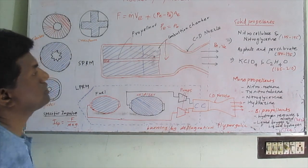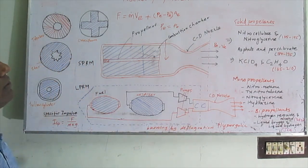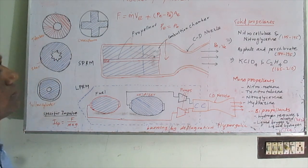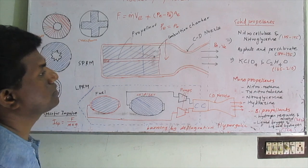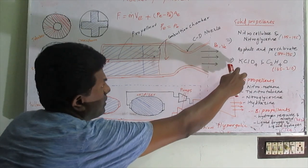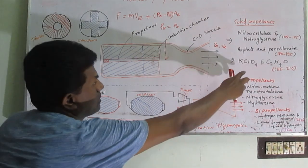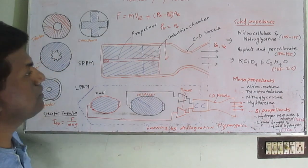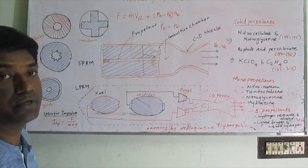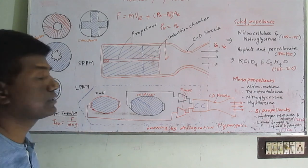Some important solid propellants include nitrocellulose and nitroglycerin, which have a specific impulse of around 105 to 195 seconds; asphalt and perchlorate with a specific impulse of 180 to 195 seconds; and KClO4 and C2H4O with a specific impulse of 165 to 210 seconds.